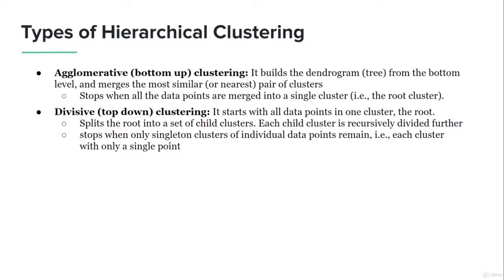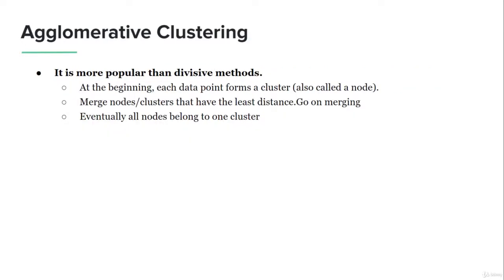In top-down or divisive clustering, we start from the root and keep dividing it into child clusters until each child cluster becomes an individual data point — that is, until each data point is its own cluster. Agglomerative clustering is more popular than divisive methods. At the beginning, each data point forms a cluster, also called a node, and we merge clusters recursively until eventually all nodes belong to one cluster.